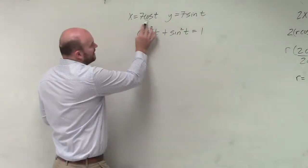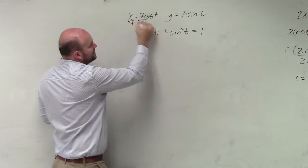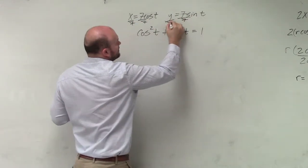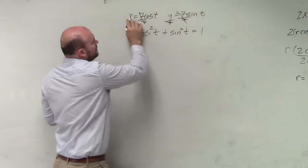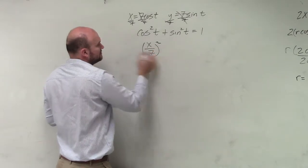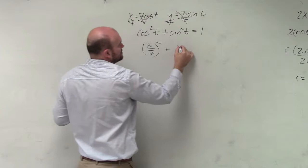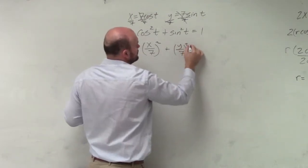So what we notice is, if I can replace cosine of t with what it's equal to, which in this case is x over 7 and y over 7. So I just write x over 7 squared, because you guys agree x over 7 is equal to cosine of t, plus y over 7 squared equals 1.